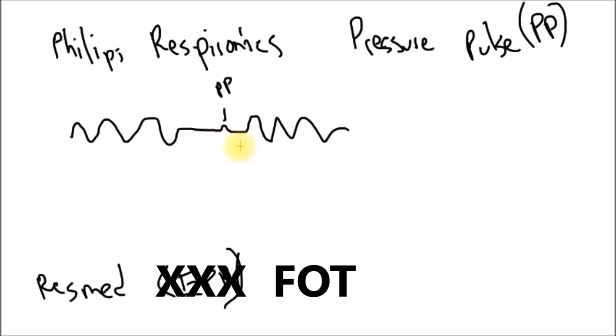So anyway, that's what a pressure pulse is. It determines and tags either a CA or an OA or whatever. Sometimes it's so jacked up, it'll call it a hypopnea. Anyway, it's a pressure pulse. You can also turn these off on your machine if you just go into the settings.